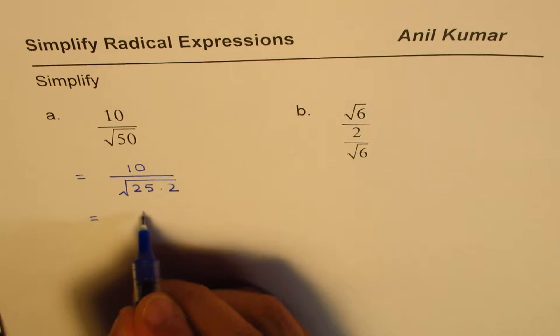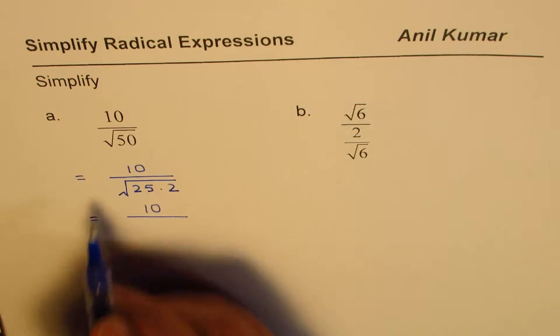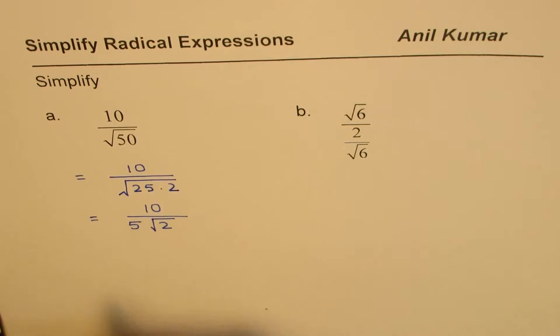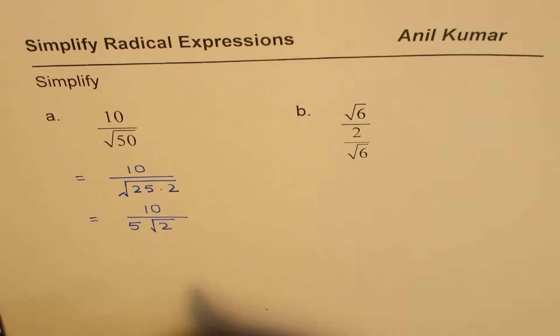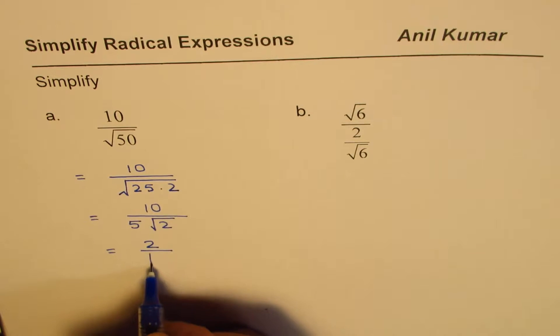Now I could write this as 10 over—25 is 5 squared—so I could write this as 5 square root 2, correct? 5 square root 2. Now this could be simplified. 10 divided by 5 is 2, so we could write this as 2 over square root 2.